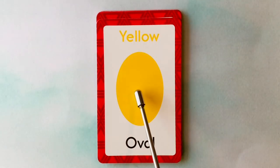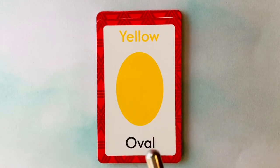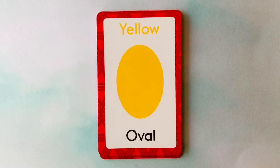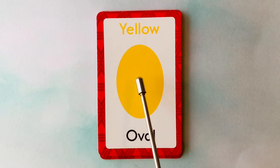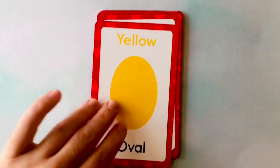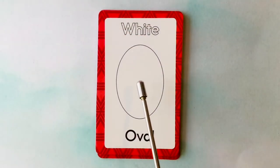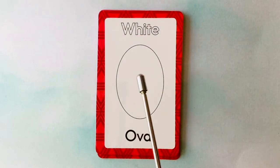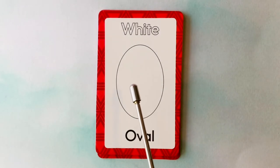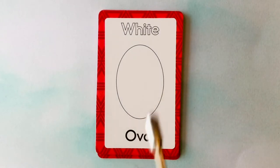This is an oval. What color is this oval? It's a yellow oval. This is also an oval. What color is this oval? It's a white oval.